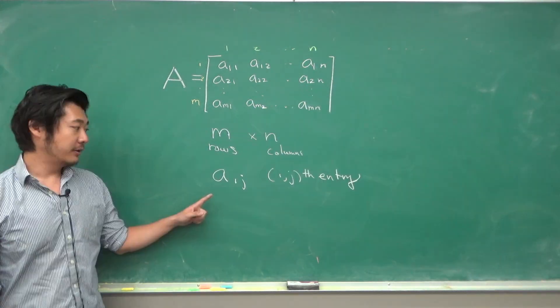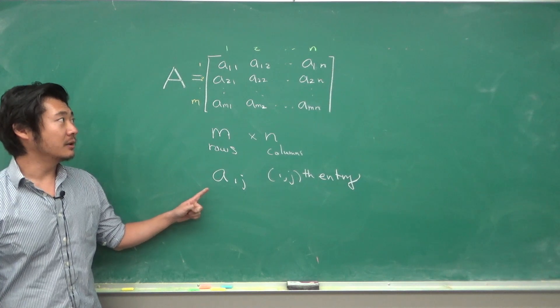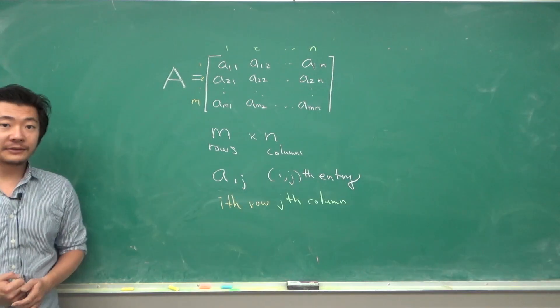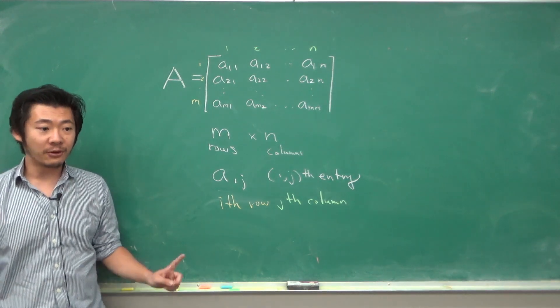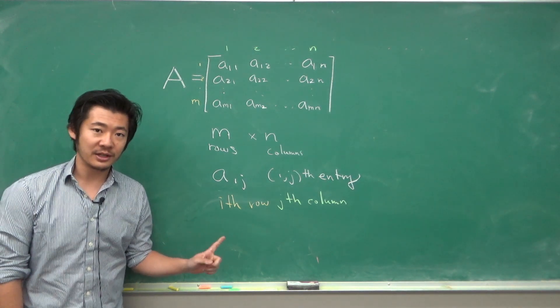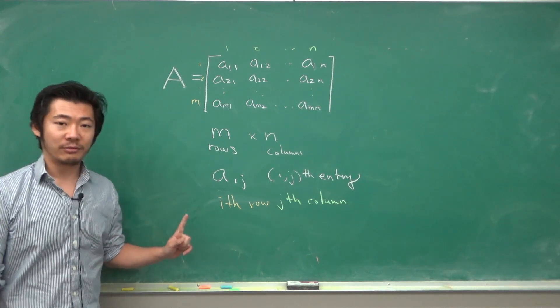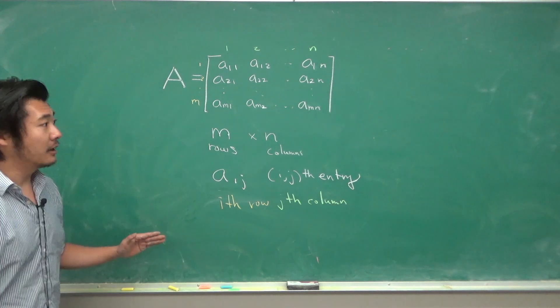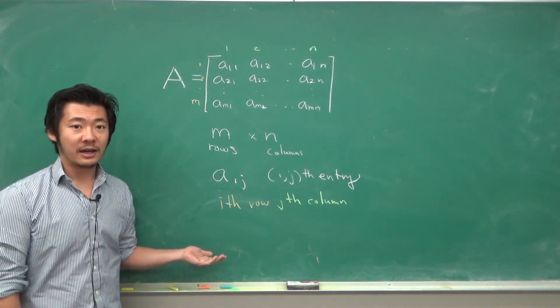When we talk about the i-jth entry, we refer to the number that is in the i-th row and the j-th column. We've seen examples of matrices before in the form of augmented matrices and also the standard matrix representation of a linear transformation. Though they are related, they're describing two different things.